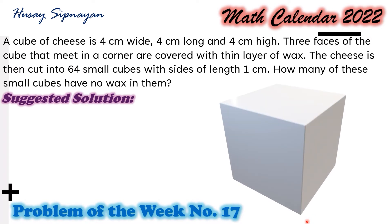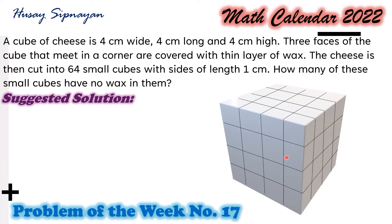Consider this cube as the cube of cheese. If the three visible faces of the cube are those that are covered with wax, then of the 64 small cubes, we have 16 of them on the front face with wax, and 12 more small cubes on the top — the 4 small cubes on the edge joining these two faces are already counted.